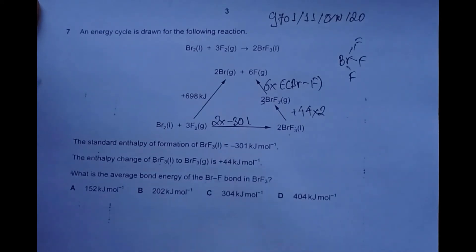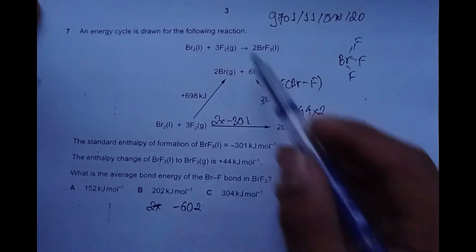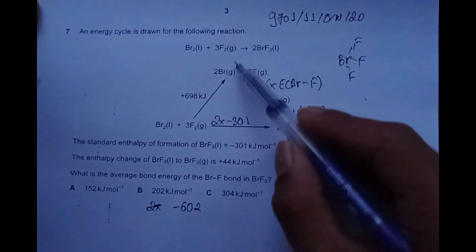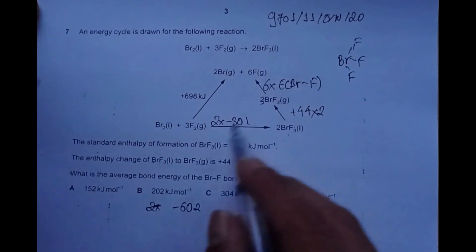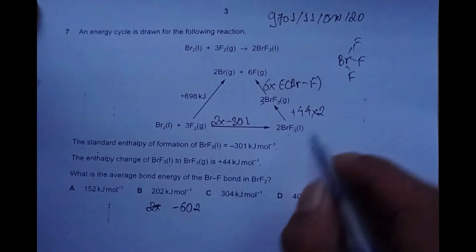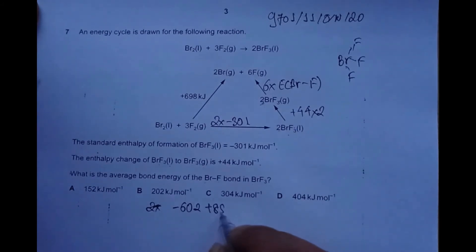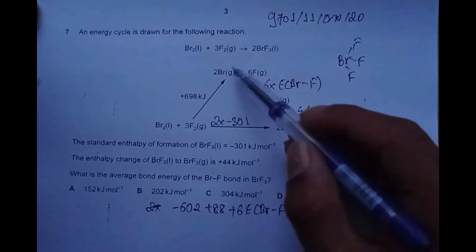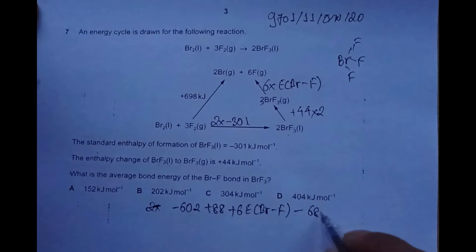Let's consider all the arrows. First, two times -301 equals -602. Going with the arrow, we add the values: +88 and +6E(Br-F). Going against the arrow, we add a minus sign: -698. This equals zero: -602 + 88 + 6E(Br-F) - 698 = 0.